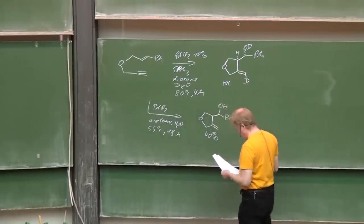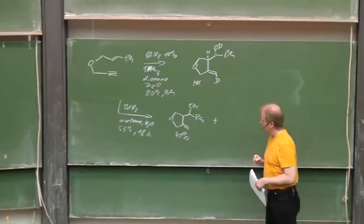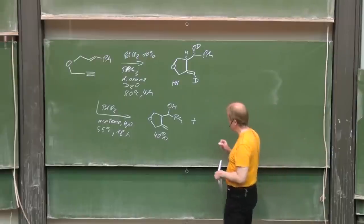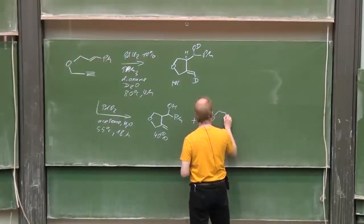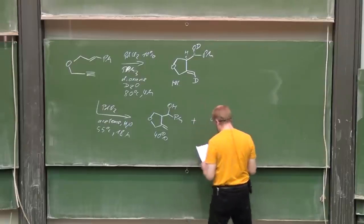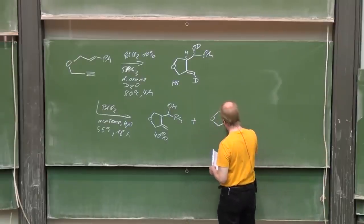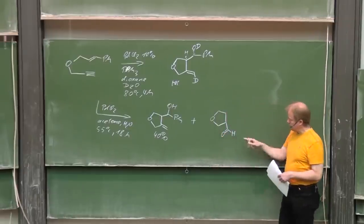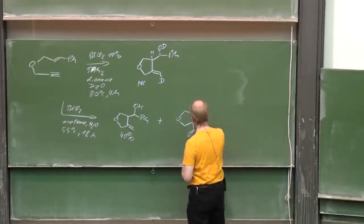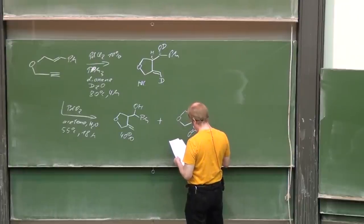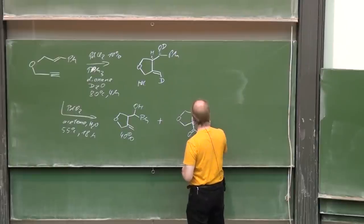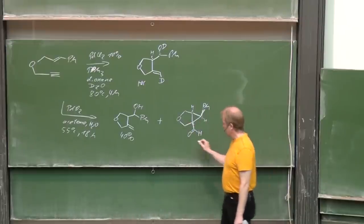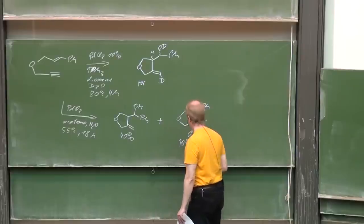But the byproduct with a 10 percent yield clarifies that the mechanism is clearly somewhat more complicated: aldehyde functionality here and moreover a cyclopropane moiety was formed. And as I said, a 10 percent yield of that.